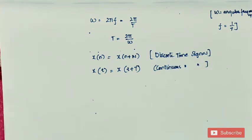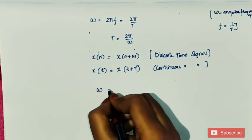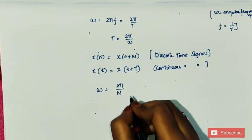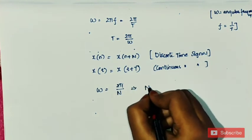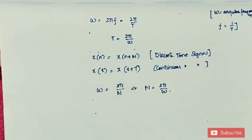From the above equations, we know that T = 2π/omega. In the same way, for discrete time signals, omega = 2π/N, which implies N = 2π/omega. This is about the periodic signal: a signal which has a definite pattern and repeats itself at a particular interval of time.